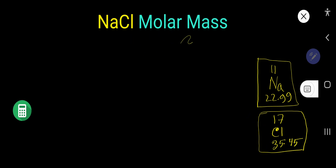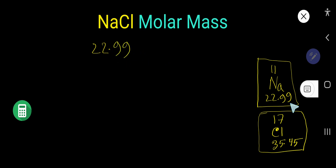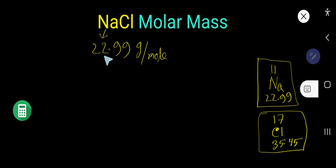To calculate molar mass, we use the average atomic mass. We have one sodium, so the average atomic mass of sodium is expressed in grams per mole. One mole of sodium equals 22.99 grams per mole.